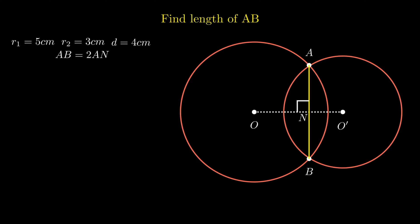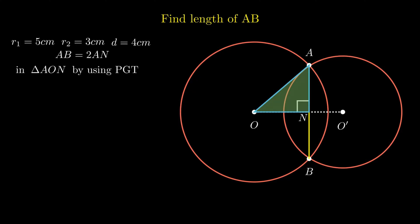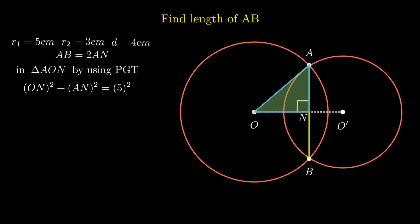To find the length of segment AN, point O and point A are joined, resulting in the formation of a right-angle triangle AON. By using Pythagoras theorem — in a right-angle triangle, the sum of the square of the base and perpendicular is always equal to the square of the hypotenuse — on substituting the corresponding values of hypotenuse, base, and perpendicular, we get ON squared plus AN squared equals 5 squared. Since this equation can't be simplified as variables ON and AN are different, we need another equation with the same variables.